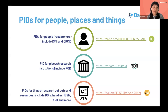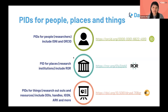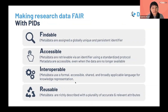For individuals — for example, researchers — we have persistent identifiers like ORCID IDs and ISNI identifiers. For places, such as research organizations, we have ROR identifiers. ROR is the Research Organization Registry. For things such as research outputs and resources, we have identifiers such as DOIs, handles, IGSN, ARCs, and more. Persistent identifiers are important because they help make the research FAIR.